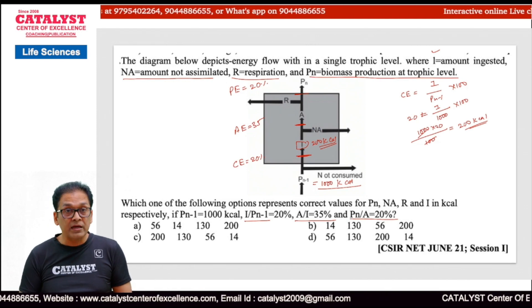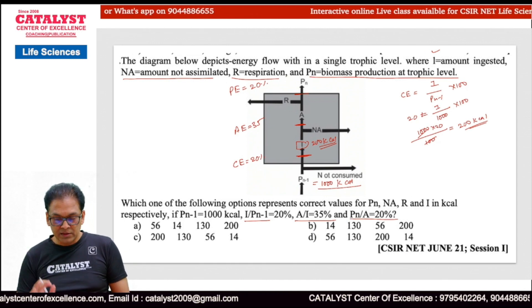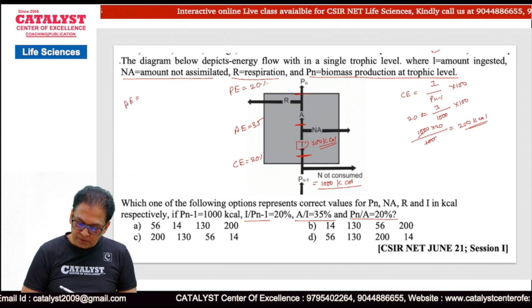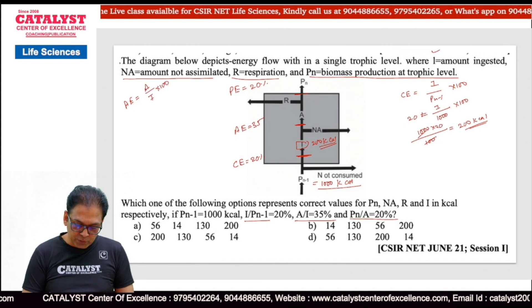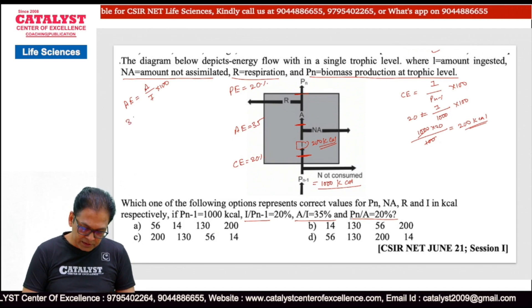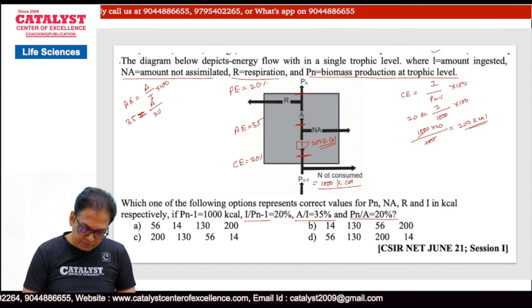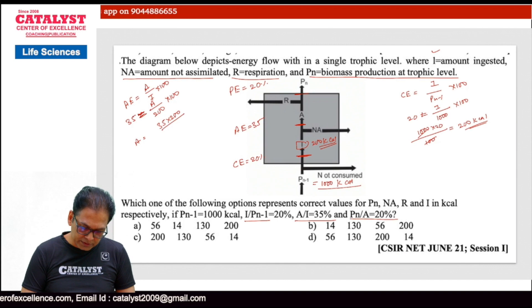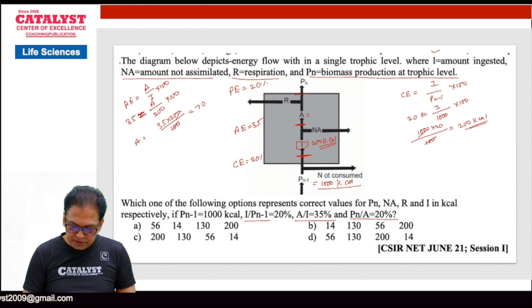Now we will calculate the value of A. The formula for assimilation efficiency is A upon I into 100. We have the value of I as 200 kilocalories. Assimilation efficiency is 35%, so: 35 = A / 200 × 100, giving A = 35 × 200 / 100 = 70 kilocalories.